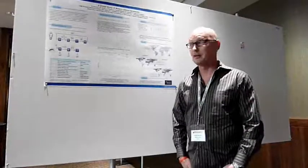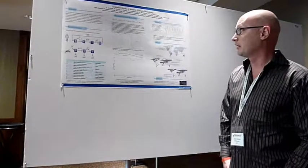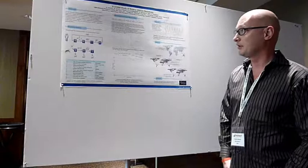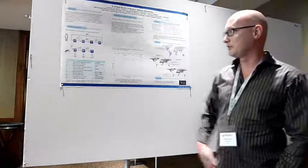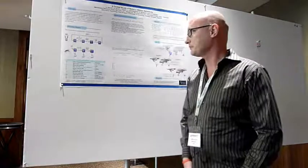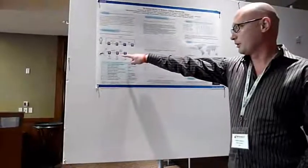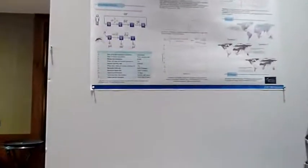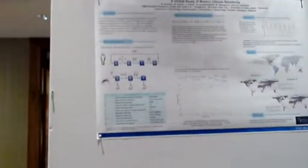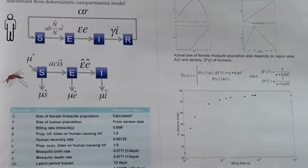I'm Stefan Edlund from IBM, and this is a global study of malaria climate sensitivity. Given a traditional MacDonald-Ross deterministic compartment model with a model for the mosquitoes as well, built on top of a vector capacity model, we are measuring the sensitivity in malaria incidence when it comes to climate changes.